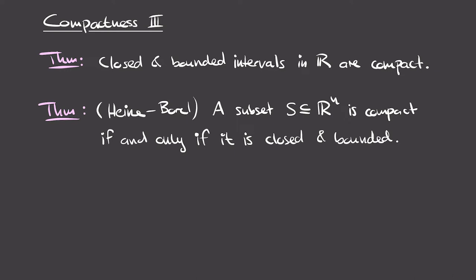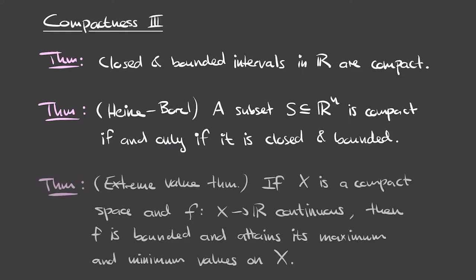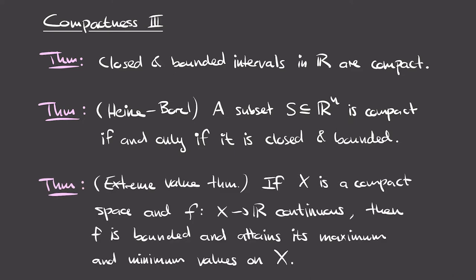The Heine-Borel theorem gives us many examples of compact spaces, because any closed and bounded subset of Euclidean space is such an example. The final theorem we'll prove is the extreme value theorem for general topological spaces. It says that if we have a compact space X and a continuous map from X to the real line, then the function f is bounded and moreover attains its maximum and minimum values on X. So continuous functions on compact spaces can't take on arbitrarily large values, and there exist points in X where f achieves its maximum and minimum.